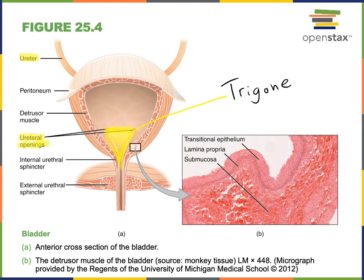We can also see in this illustration the major muscles of the urinary bladder and urethra involved in regulating micturition. The detrusor muscle is the smooth muscle found in the wall of the urinary bladder that contracts during micturition to help force urine out through the urethra.